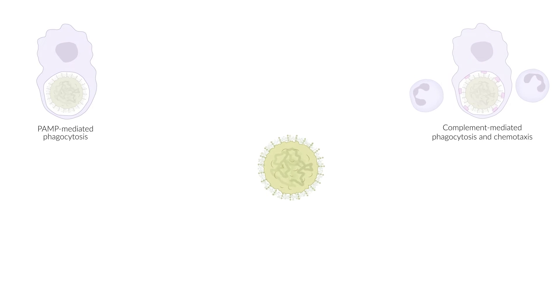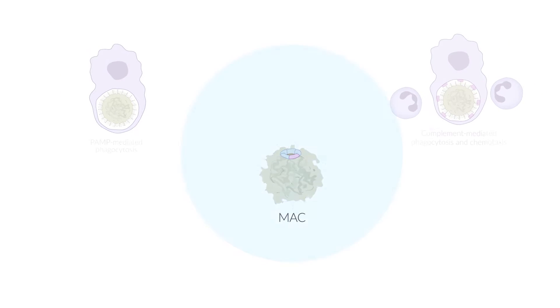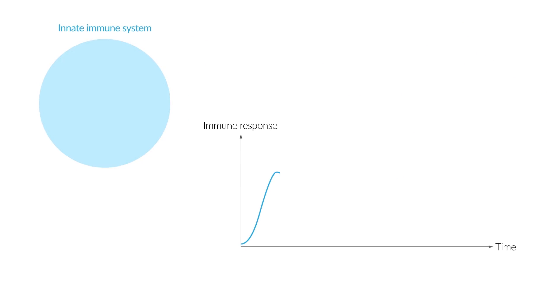Third, the complement cascade leads to the formation of the membrane attack complex, in short, MAC, which produces pores that especially kill gram-negative bacteria.